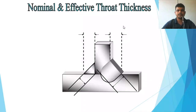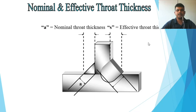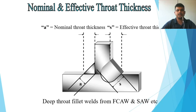For fillet weld throat thickness: 'a' is the nominal throat thickness — the design or specified throat thickness. 's' is the effective throat thickness — during welding, fusion penetrates deeper into the joint, so the effective throat extends further inside. This is also called the actual throat thickness.